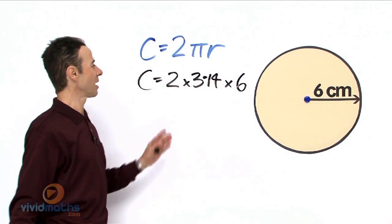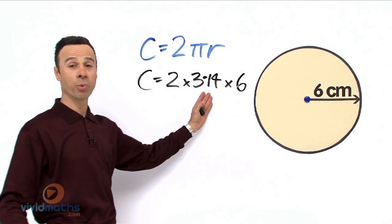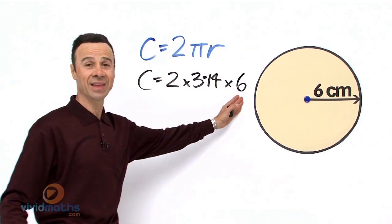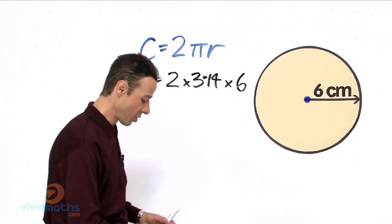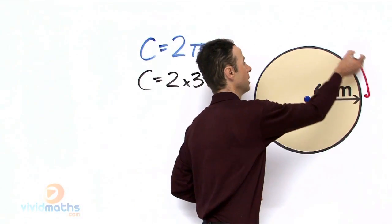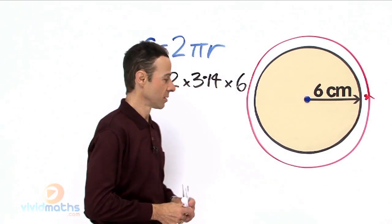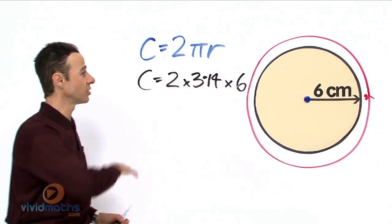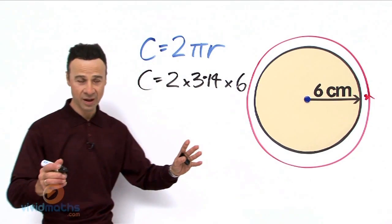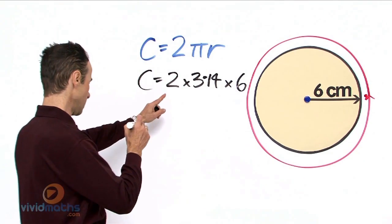We just multiply 2 times 3.14 times 6, and that will give us the total distance all the way around the circle. The circumference in total is...